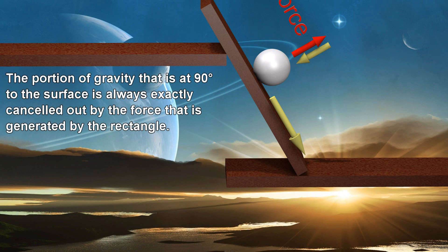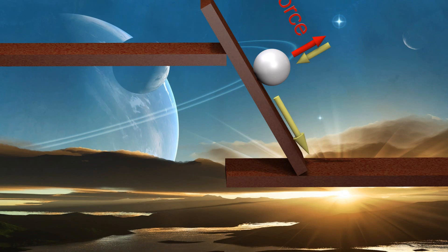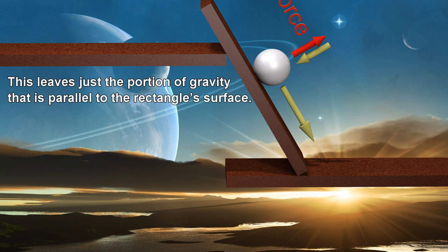The portion of gravity that is at 90 degrees to the surface is always exactly cancelled out by the force that is generated by the rectangle. This leaves just the portion of gravity that is parallel to the rectangle's surface.